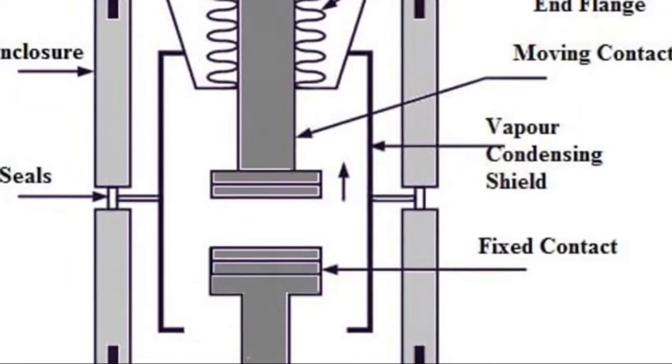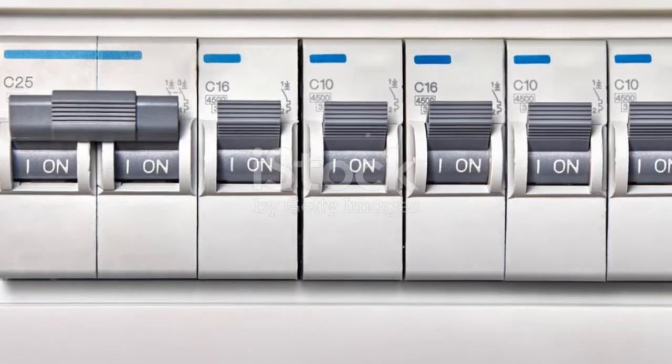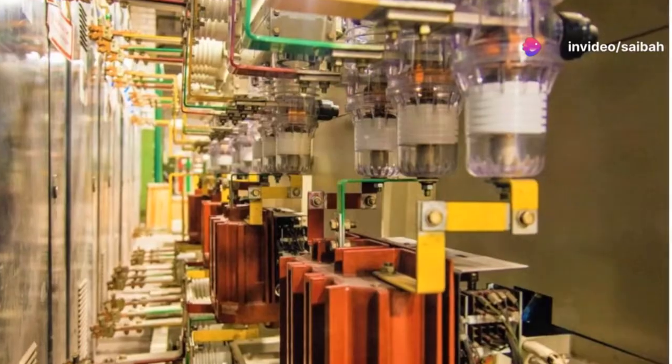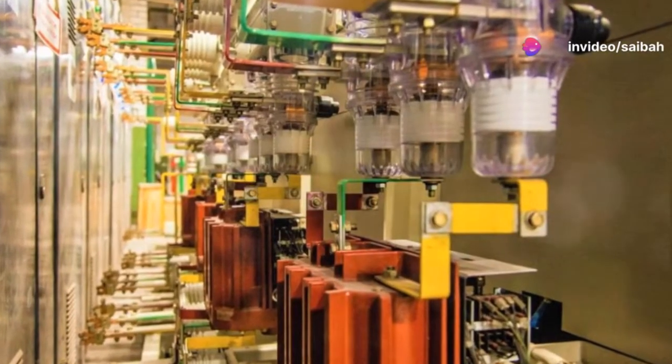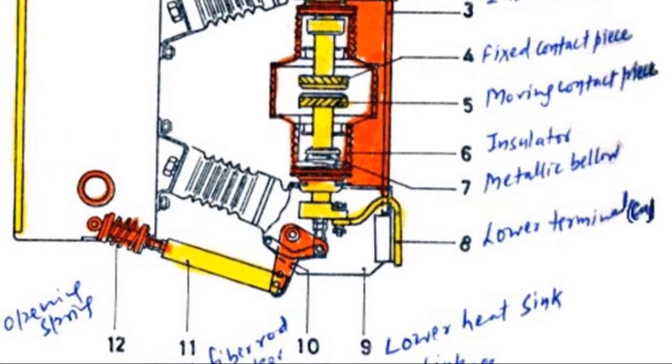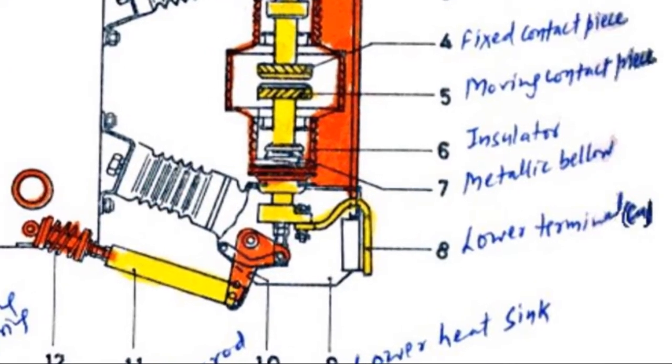During normal conditions, the contacts inside a VCB remain closed. But when a fault occurs, like an overload or a short circuit, the breaker activates. The moving contact separates from the fixed contact, creating an arc. The material of the contacts and the intensity of the current influence how the arc behaves and ultimately how it's extinguished.